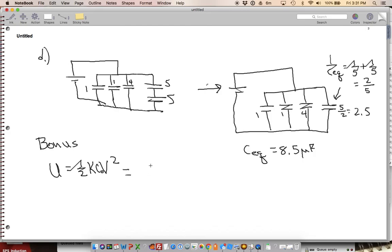one half times two times the total capacitance is 8.5 microfarads, and then 10 squared, right? So I've got 10 squared times 100 volts. So I'm going to end up with 850 microjoules.